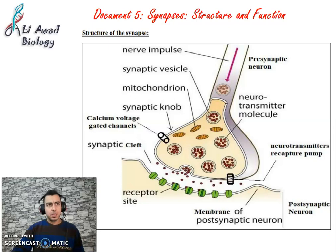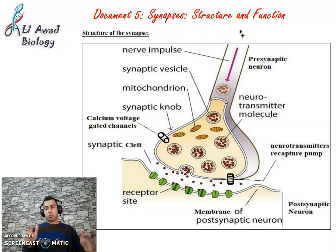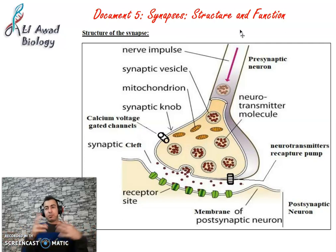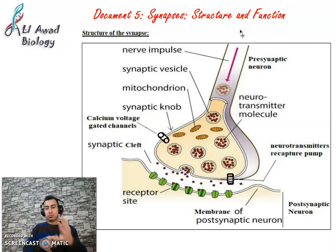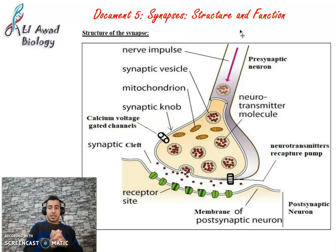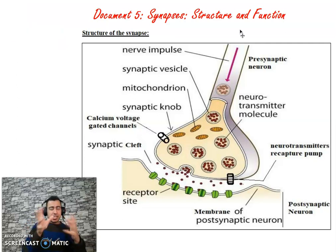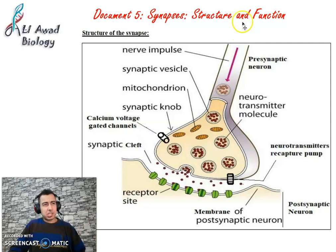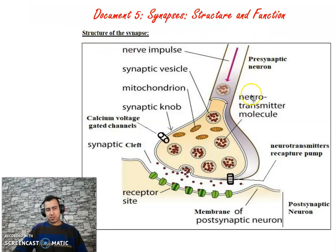Hello dear students. In this video I'm going to continue with document 5: synapses, structure and function. In the previous video we explained the meaning of synapses, where we find synapses, the types of synapses — inhibitory, excitatory, according to shape, according to function, and everything about synapses. Here I'm going to provide extra information about synapses.